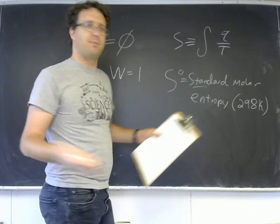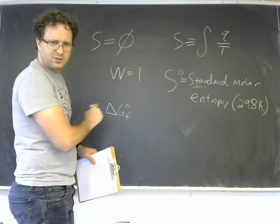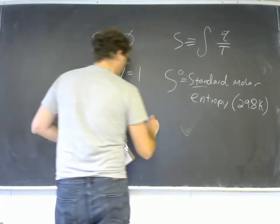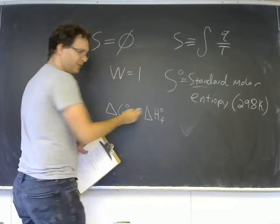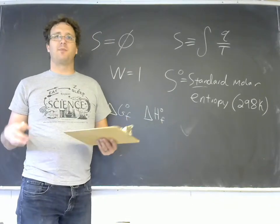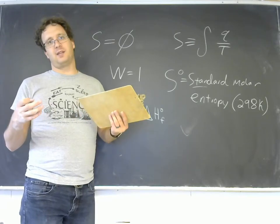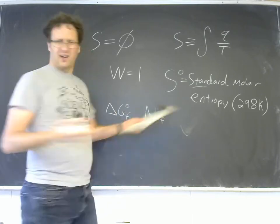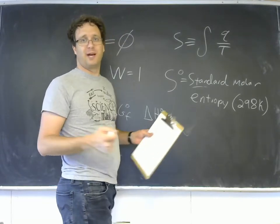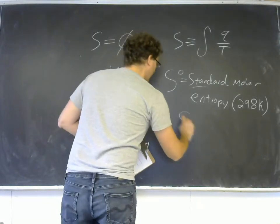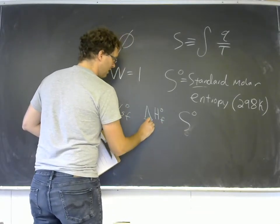In that table in the appendix, you'll see a delta G° of formation, which we'll get to later, and you'll have a delta H° of formation—these are the standard enthalpies of formation. And then you have S°. I want to point out that there's no delta, and there's no F.